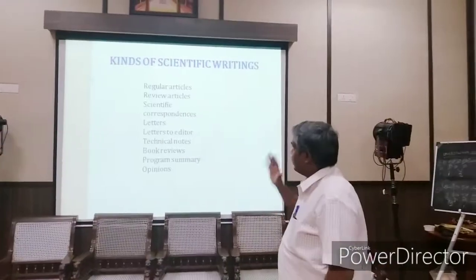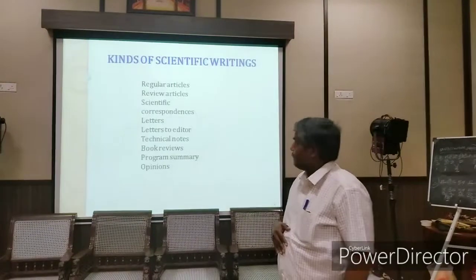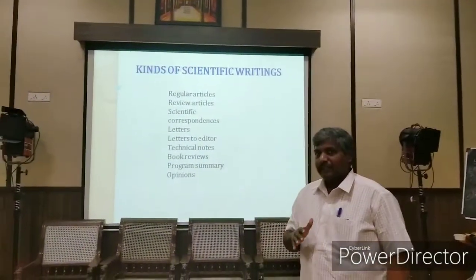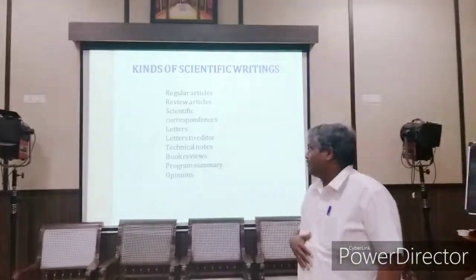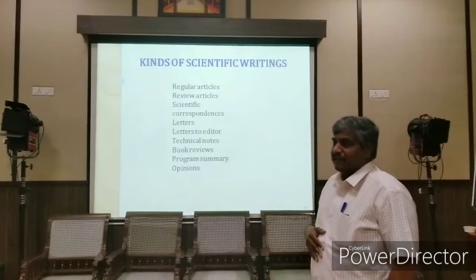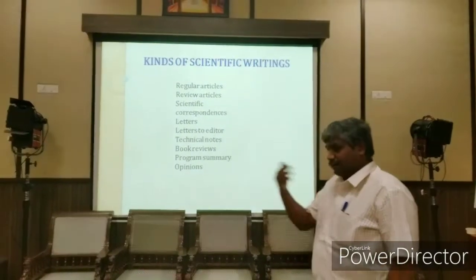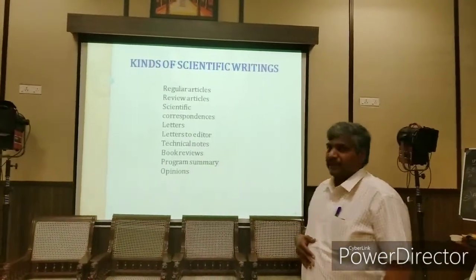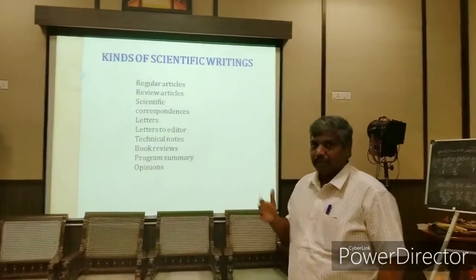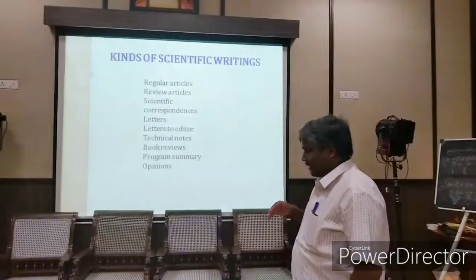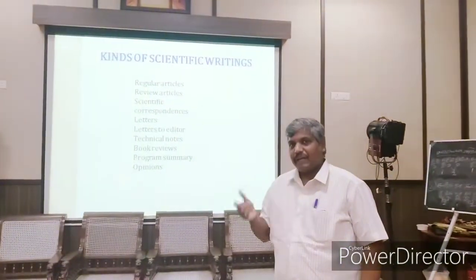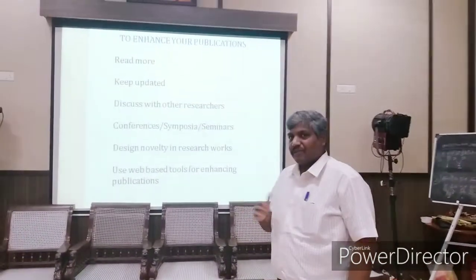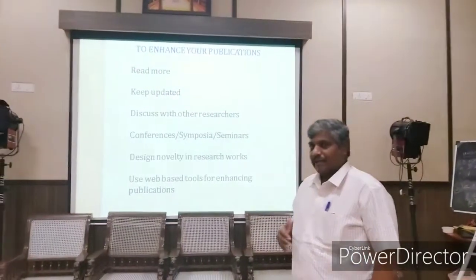These are the different kinds of scientific writings. Regular research articles are one category. Next, review articles, which publish previously published information in a literature review format. Scientific correspondence is another type — you can write letters to the editor, which can be a publication. Technical notes can be written. Reviews of books can also be published in some journals. Conference summaries can be presented as a paper, and opinions about different writings can also be a kind of scientific writing.